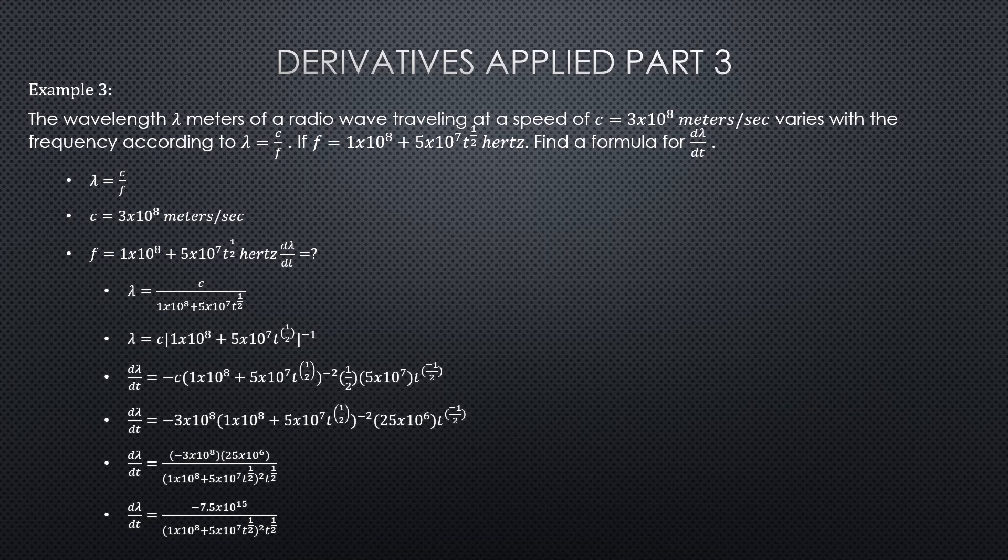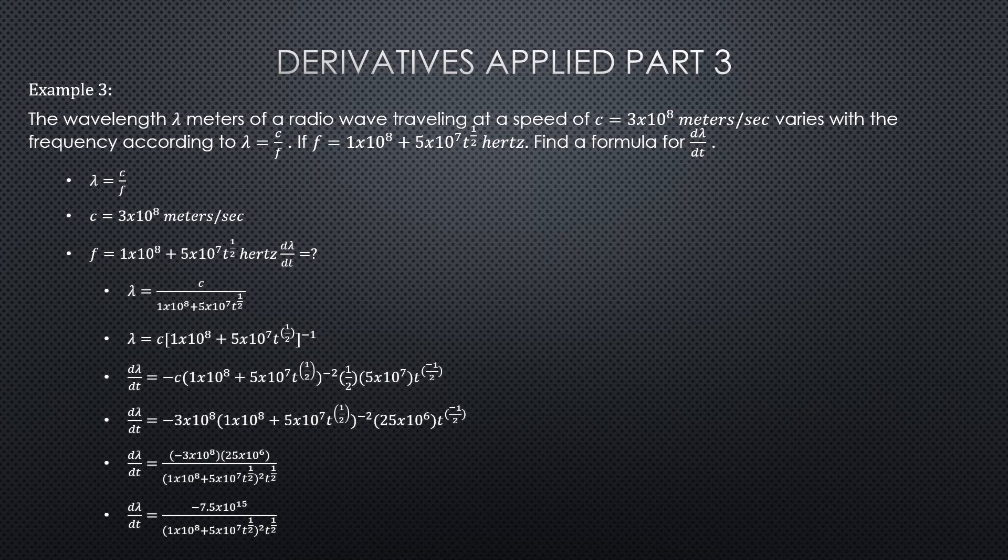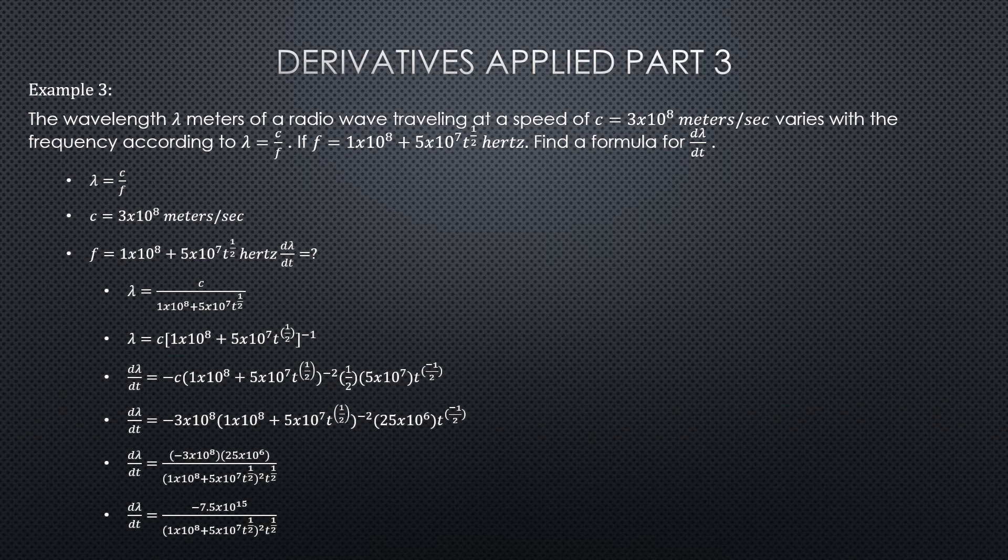And then go ahead and take the derivative. Now you're ready to take the derivative dλ/dt. Now we take the derivative in terms of c, which is fine because c is a constant speed of light, and then we can put the speed of light back in, 3 times 10⁸.